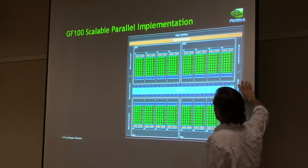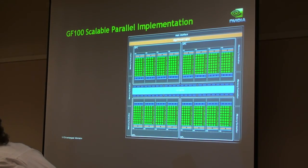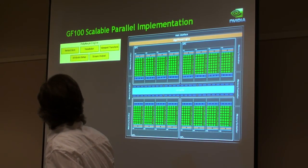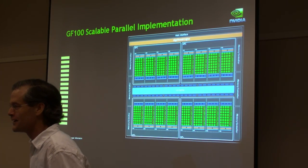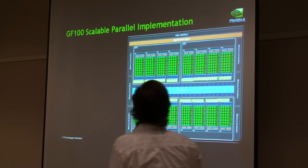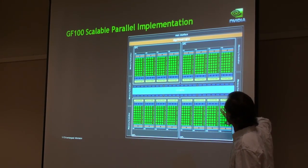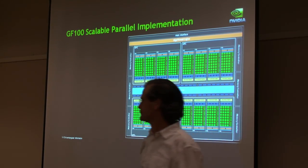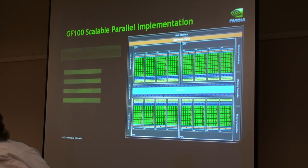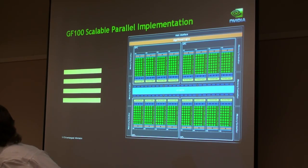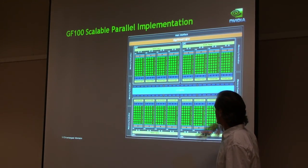Here you see the block diagram with some highlighted spots showing what this looks like. We took the Polymorph engine and created 16 of them, placing an instance of these engines in each of the SMs, which is the lowest unit of scaling in the architecture. Similarly, we took the raster engine and pushed it out to the next higher level of architectural replication, so you have a rasterizer per GPC.